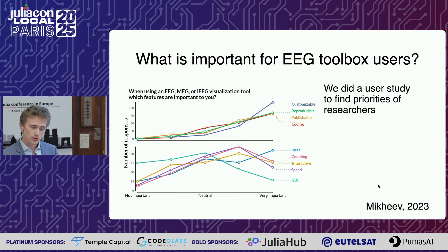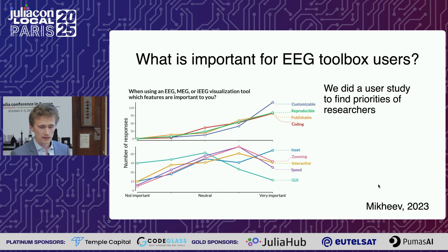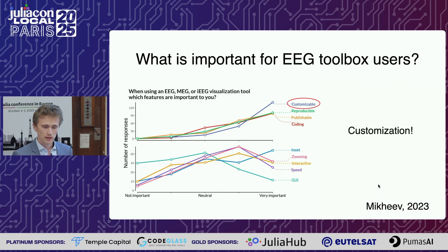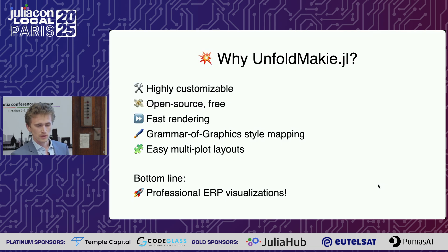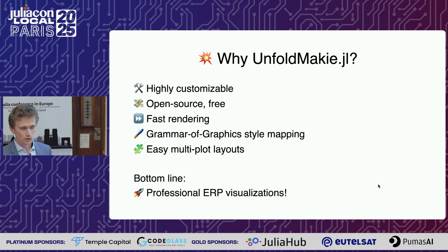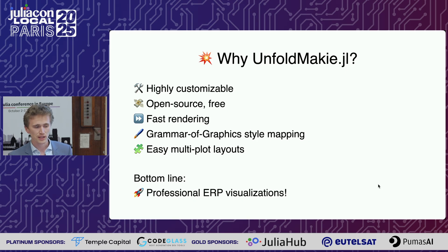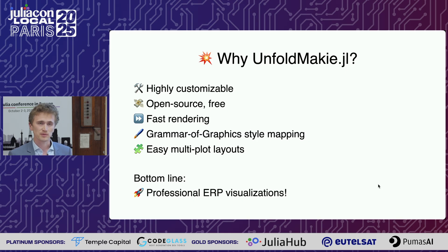Also in this study, we asked researchers what kinds of things are important to them in EEG toolboxes. The most popular response was customization. After this user study, we started to develop our UnfoldMakie package more intensely. We wanted to create a highly customizable tool that would be open source and free, quite fast — at least faster than MATLAB — and at the end give you professional ERP visualizations.